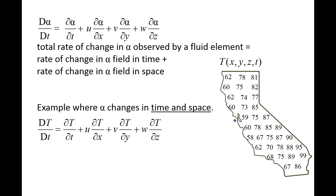Let's examine a situation in which a fluid element will experience a temperature change as it travels over California. In this case, the physical quantity alpha is temperature. The temperature field varies between locations, so the partial T/partial x, partial T/partial y, and partial T/partial z terms are non-zero. Additionally, as the fluid element moves, the temperature field is changing in time, so the fluid element experiences a change in temperature due to the temperature field varying in both time and space.